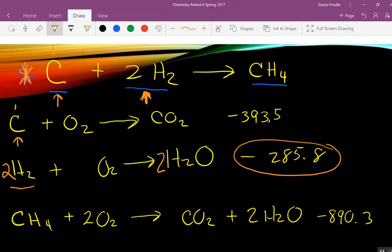If I've doubled the equation, what happens to this number? It doubles. So, can somebody do 285 times two? 285.8 times two. What'd you get? 571.6. It's still negative. We just doubled the reaction. So, we're going to double the energy it releases.